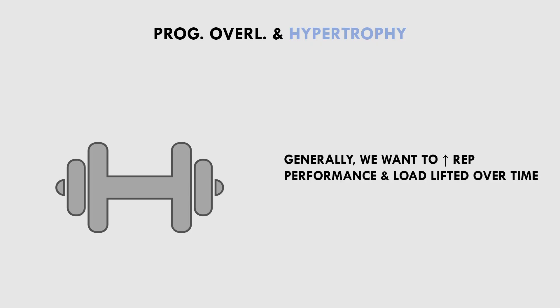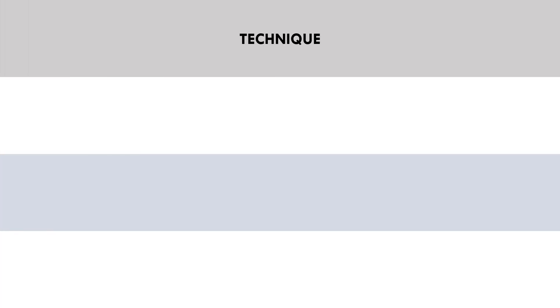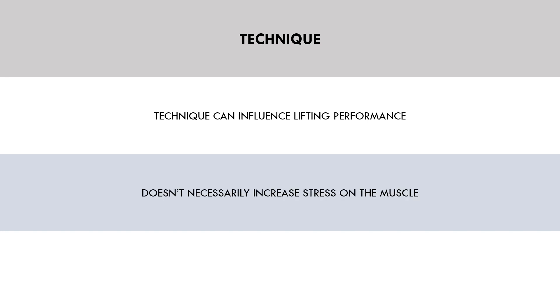This means increasing load lifted and reps performed over time. However, we also need to consider the practical implementation. The only reason we want an increase in lifting performance is to increase stress to the muscle, so we should never reduce muscle stress for the sake of increasing performance. There are a number of factors which may influence lifting performance without directly impacting muscle stress. First is technique — trainees can alter lifting performance simply by adjusting technique. A trainee may be able to lift more weight by switching to a biomechanically more efficient technique, but this may not necessarily increase stress to the target muscle.